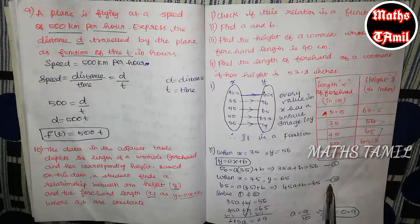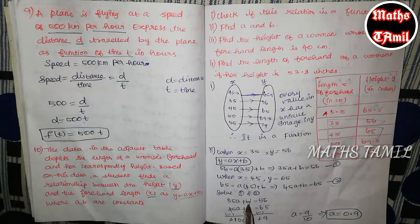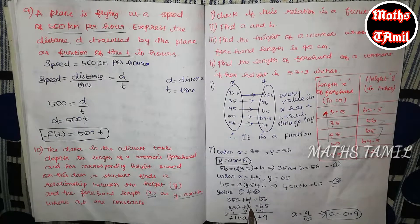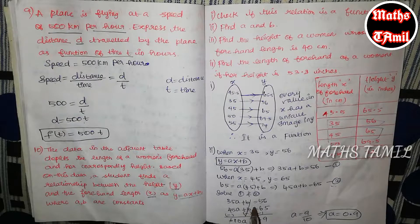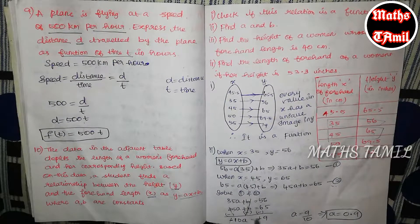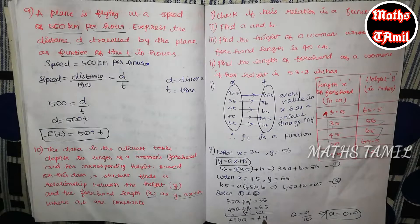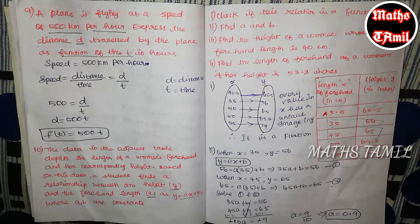Now we solve this equation. We change the symbols and simplify. If we cancel, we add 10a minus 10a, and we get minus 9. Minus minus cancels, so a is equal to 9 divided by 10, which is 0.9.